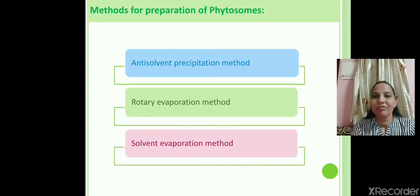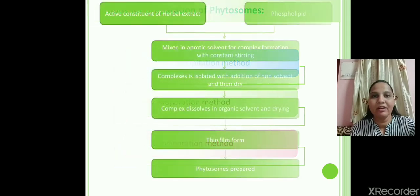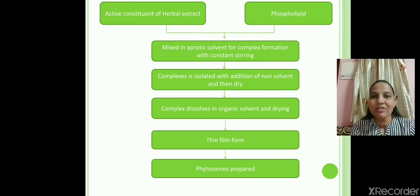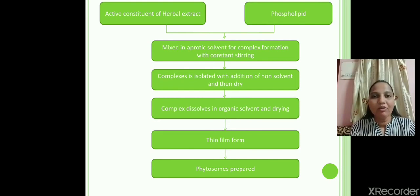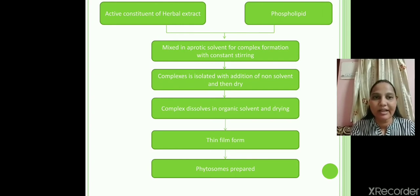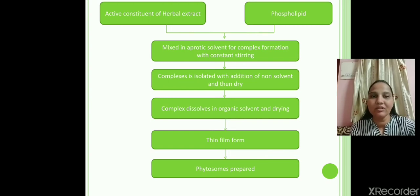There are three methods for preparation of phytosomes: the anti-solvent precipitation method, the rotary evaporation method, and the solvent evaporation method. In the common preparation method, the water-soluble active constituent of herbal drugs and phospholipids (soya lecithin or phosphatidylcholine) are mixed in an aprotic solvent — meaning a solvent with no OH or NH bond. They are mixed in a round-bottom flask with constant stirring. A complex is formed, which is then dissolved in an organic solvent to form a thin film — that is the phytosome.